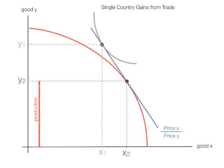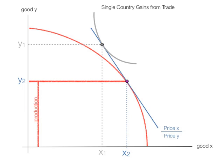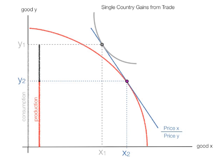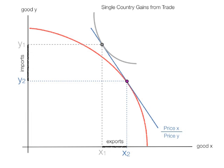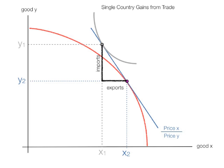Now, the country produces at a level Y2, from the origin to Y2 — that's its level of production. A country will consume at a level from 0 to Y1 — that's the gray line. Notice that consumption is greater than production, so the country has to import the difference. The level of imports and the level of exports are measured by those two distances.